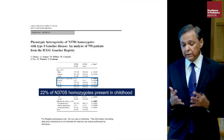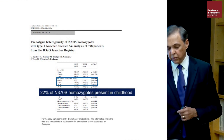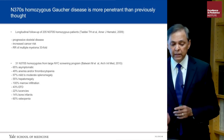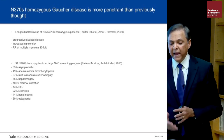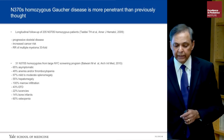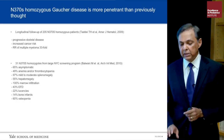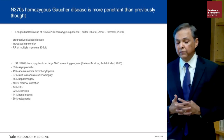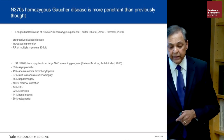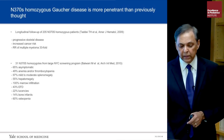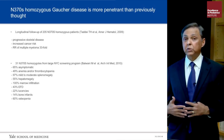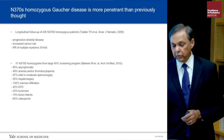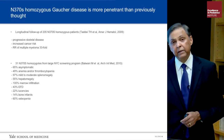22% of N370S homozygotes present in childhood. Our Yale study showed that N370S Gaucher disease is associated with progressive skeletal disease and increased risk of multiple myeloma in adults. A study from Mount Sinai in New York City found that 31 N370S homozygous patients diagnosed through genetic screening had a surprisingly high incidence of bone manifestations, cytopenia, and visceral disease.